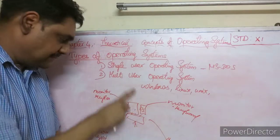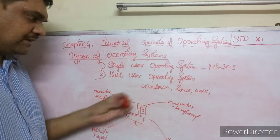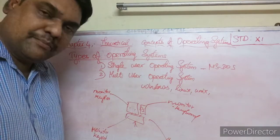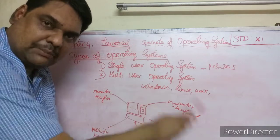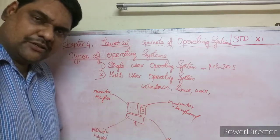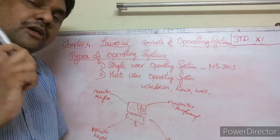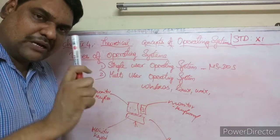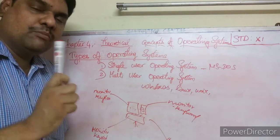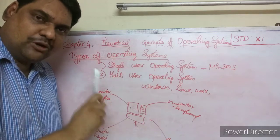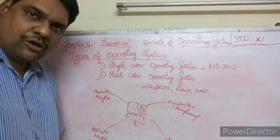So it is called a multi-user operating system. Windows, Linux, and Unix are multi-user operating systems used in networking. Computers are connected in a network, and dummy terminals send instructions to the main computer. To summarize: single-user operating system means only one user can use the OS at one time — example MS-DOS. Multi-user operating system means more than one user can use it at the same time — example Windows, Linux, Unix. Thank you.